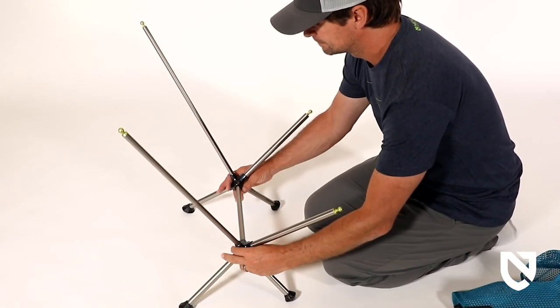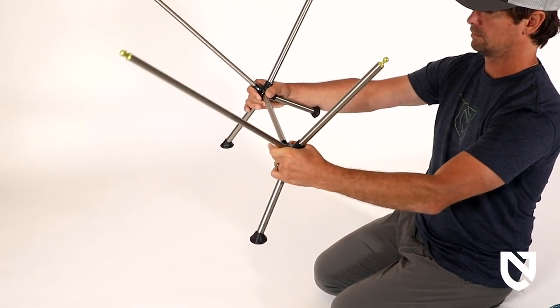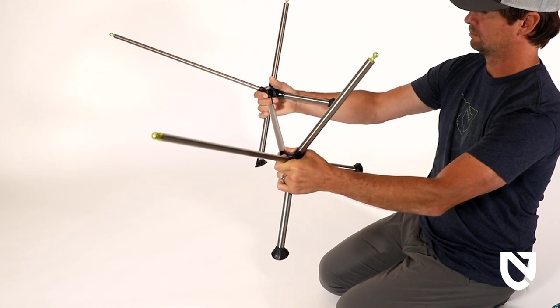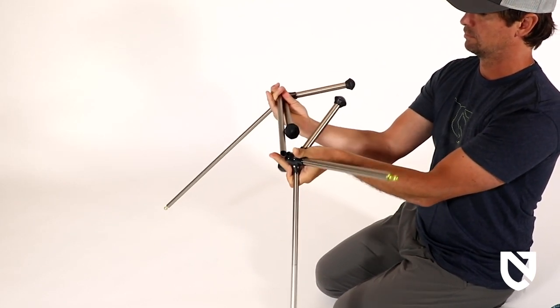To disassemble the frame, start by holding it up in front of you by the hubs. Next, pull both hubs off the oval crossbar and fold to ensure the riveted legs are in line with the crossbar.